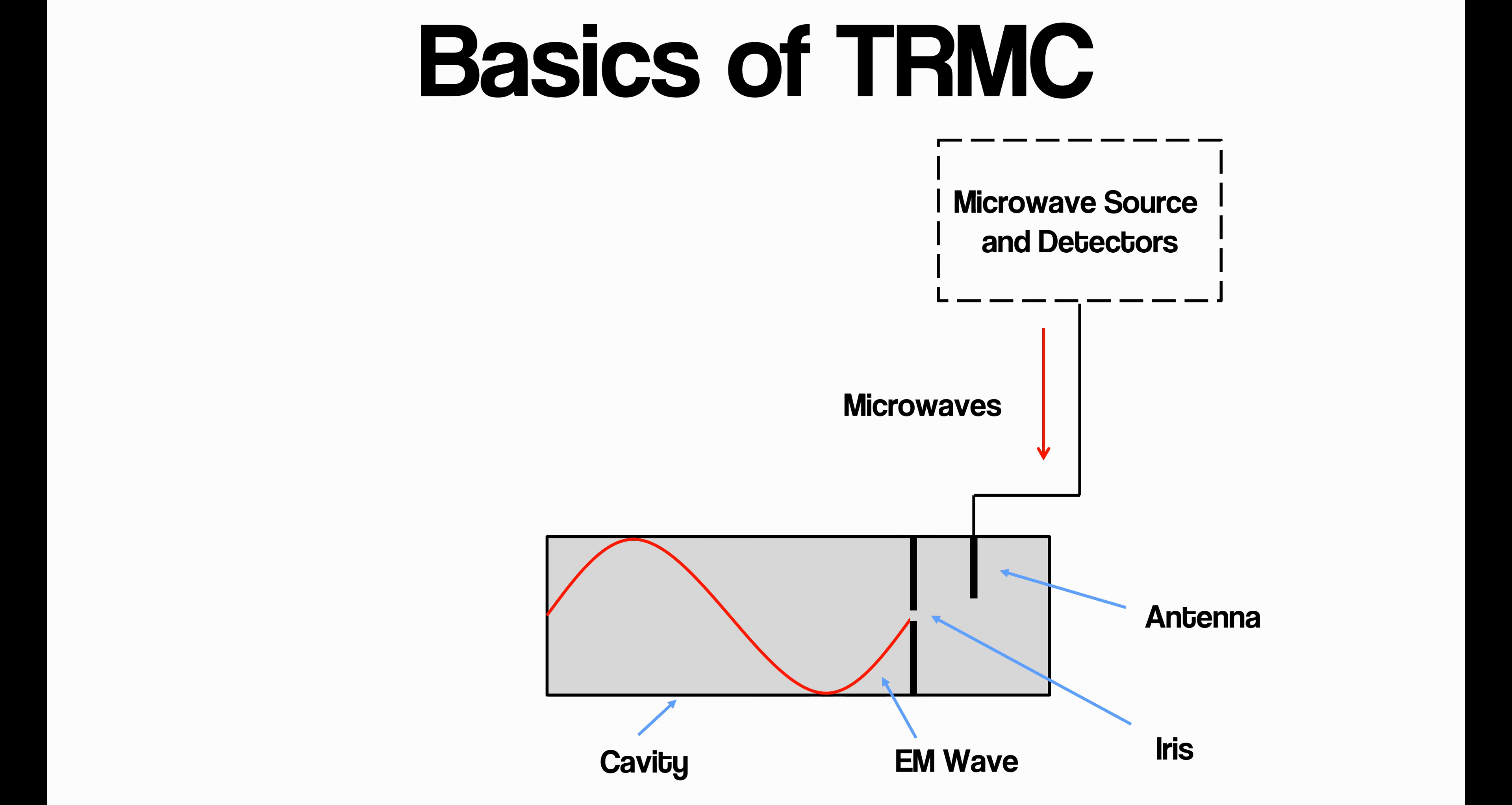Of course, in reality, these walls are never going to be 100% reflecting, so you're always going to get some loss. But because microwaves are being continuously supplied, you are able to form this standing wave.